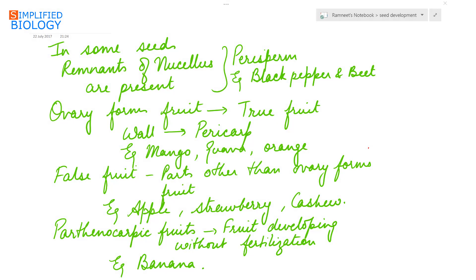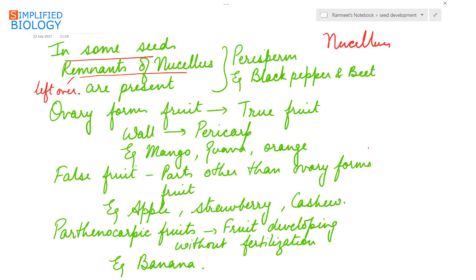During development of endosperm, the nucellus gets crushed. In some seeds, remnants of the nucellus — leftovers — are present; these are referred to as perisperm. Perisperm can be seen in black pepper and beet.